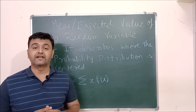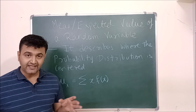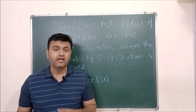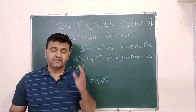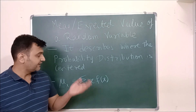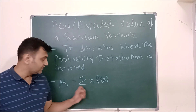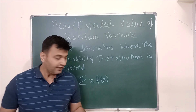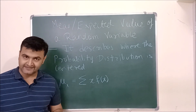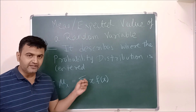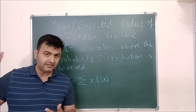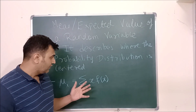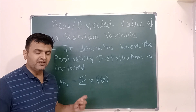Today we concentrate on the expected value, or expectation, or mean of a random variable. It actually describes where the probability distribution is centered. Once you have a random variable, you find its probability distribution and want to see where it is centered. The formula that helps you is the summation of x times f(x), where x is the values the random variable takes, and f(x) is the probability distribution for each x. You sum from minus infinity to infinity — wherever f(x) is not defined, you take it to be zero.